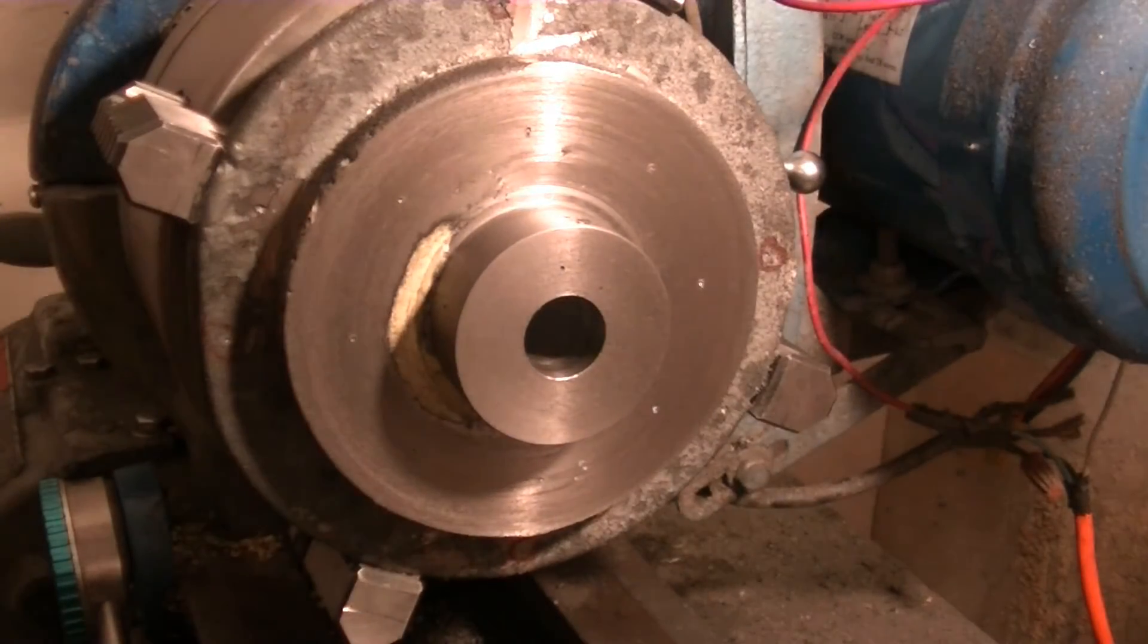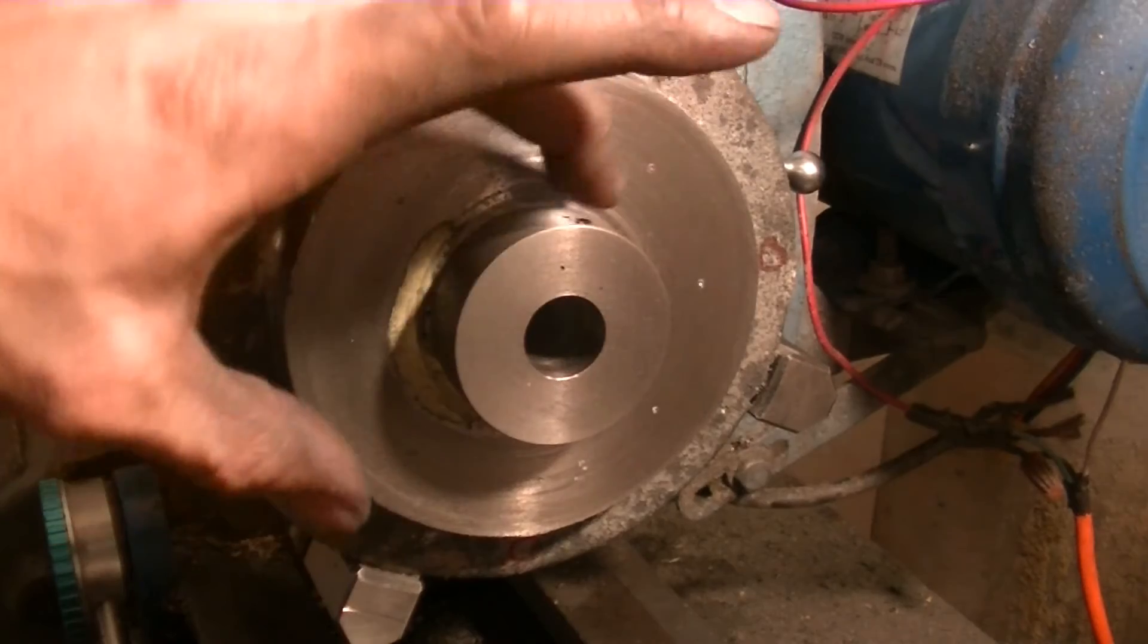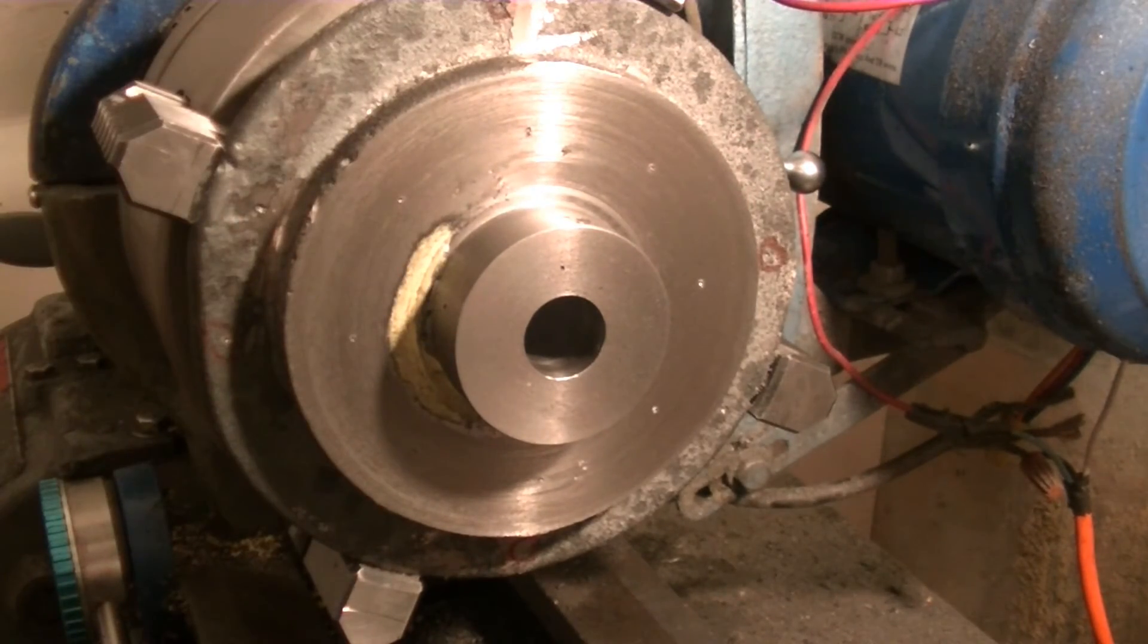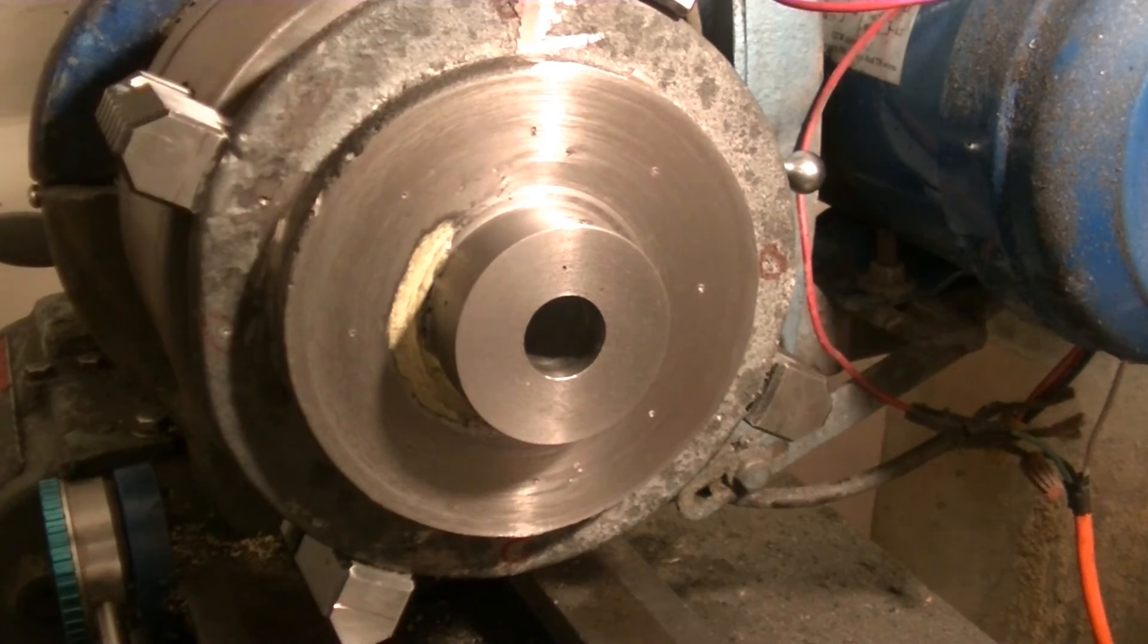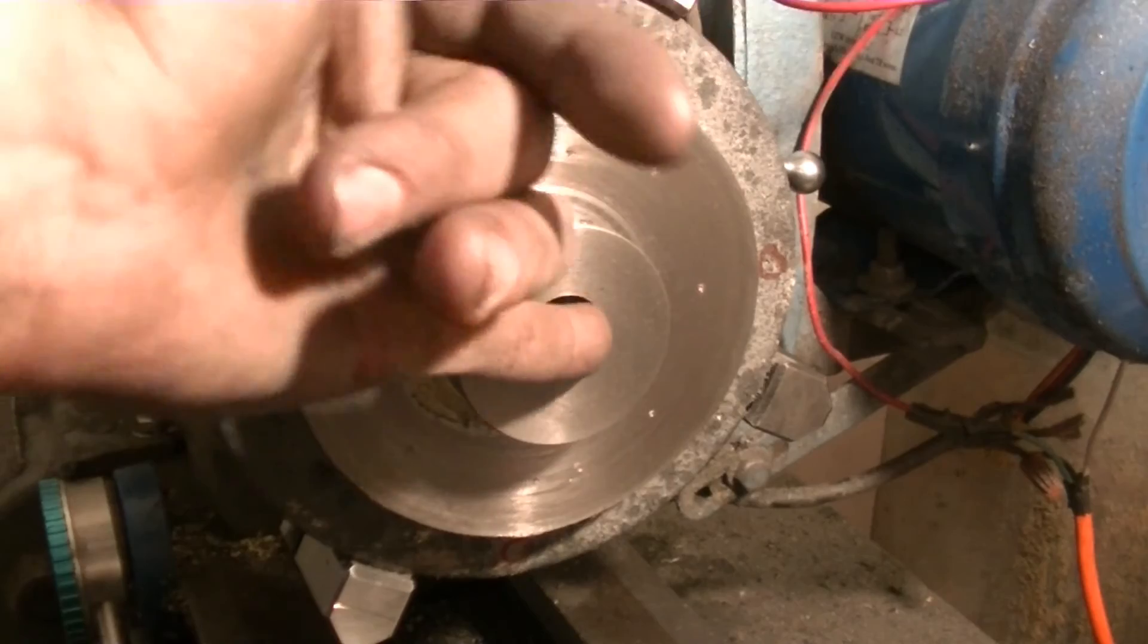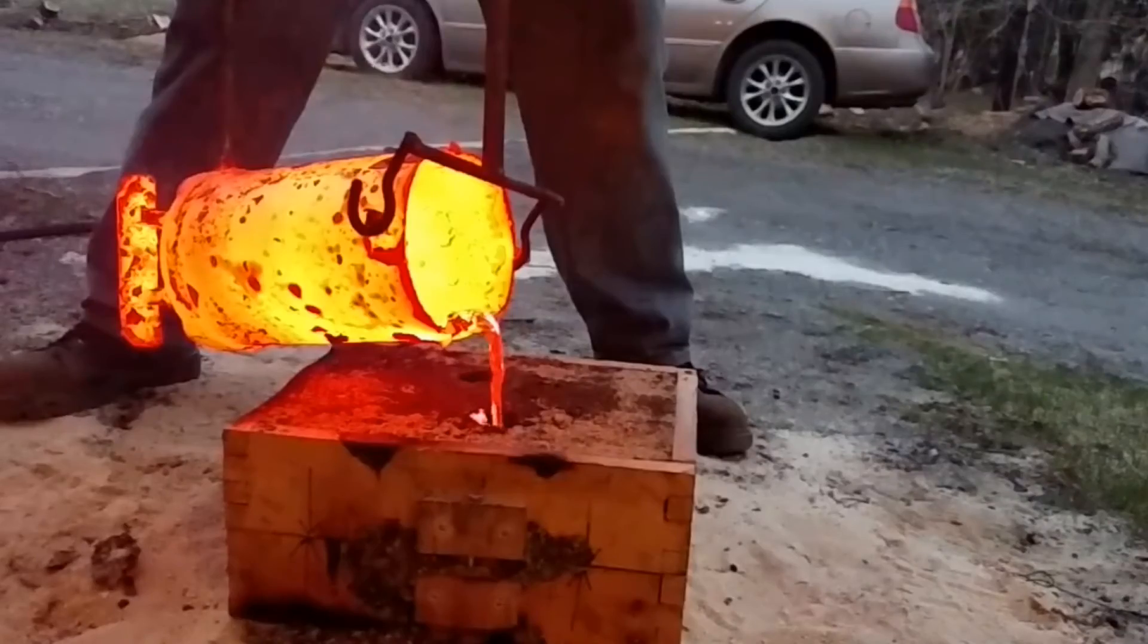The stuffing box is so we can seal the bottom shaft as it goes through here. Because it's going to be pressurized on one side. So we need to make a gland for that. So I'm going to take this out and we're going to flip it over. And then we're going to indicate it in on the reamed hole.